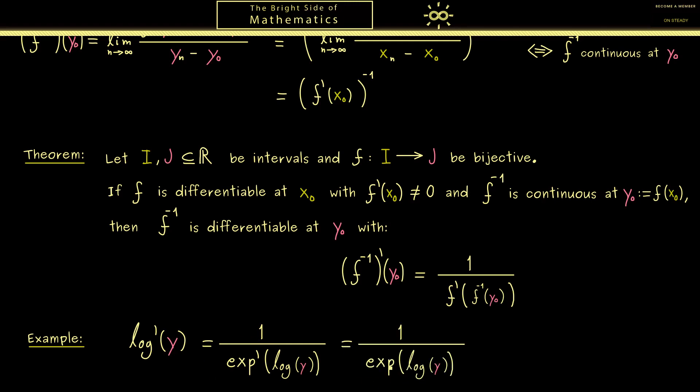So what we have is the function and its inverse together which just cancel out. So what remains is just 1 over y. And there we have it. This is the derivative of the logarithm function.